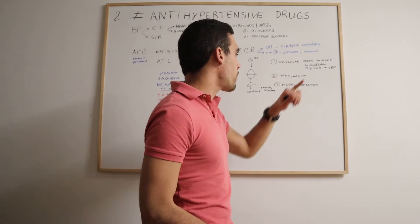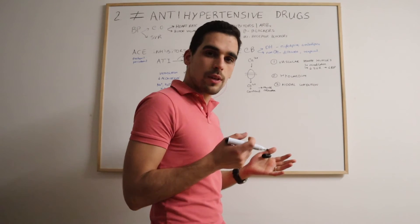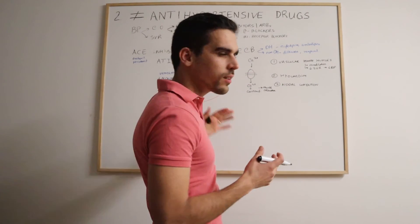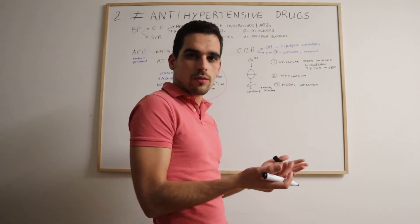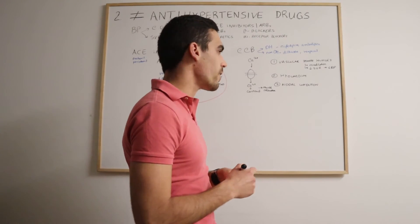Whilst the verapamil acts more on the nodal conduction, so it blocks the system that makes the heart to pump. Basically, reduce the heart rate. It's called a negative inotropic effect. Our cardiac output is reduced and our blood pressure is reduced as well.